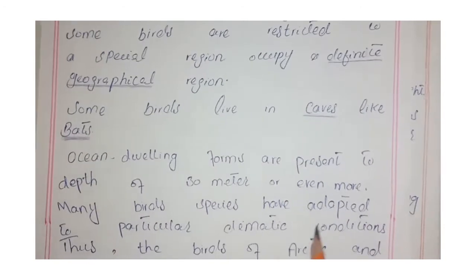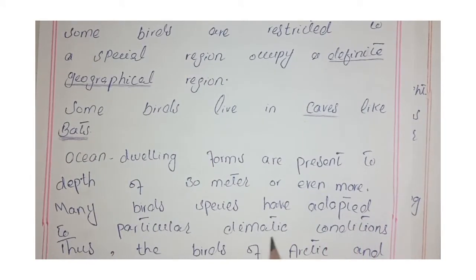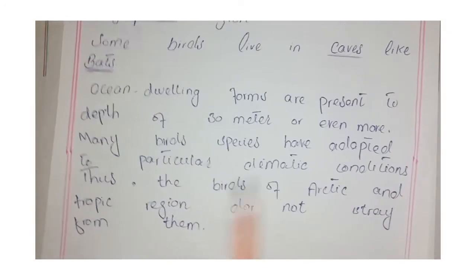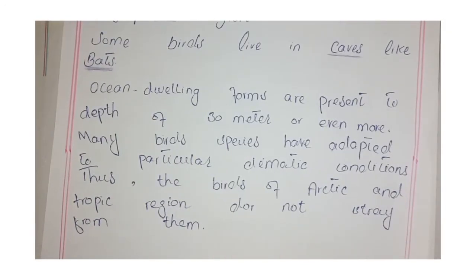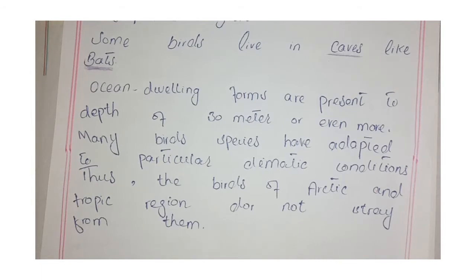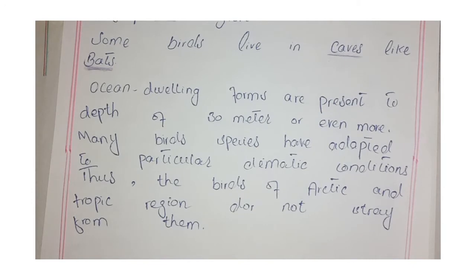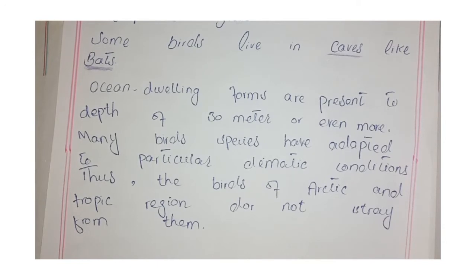Many bird species have adapted to particular climatic conditions. The birds of Arctic and tropic regions do not stray from their zones. They adapt to whatever climate and environmental conditions exist in their region — this is why they cannot survive outside their particular climate conditions.